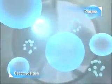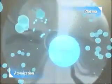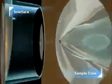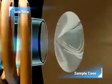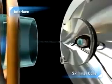As they travel through the high-temperature argon plasma, the aerosol droplets are dried, decomposed, atomized, and finally ionized, producing a rich source of positively charged ions. The ions are extracted from the plasma into the interface through the sampling orifice, and then through the skimmer cone into the high-vacuum region containing the ion lenses and mass analyzer.